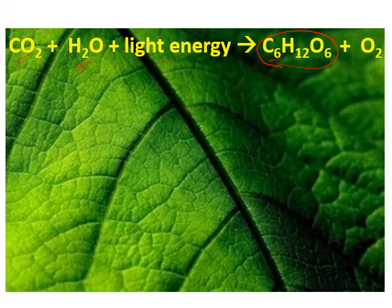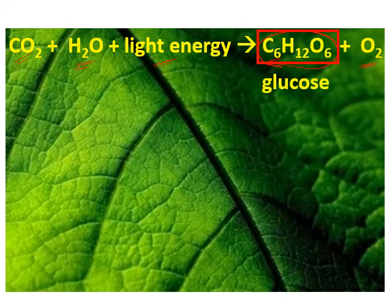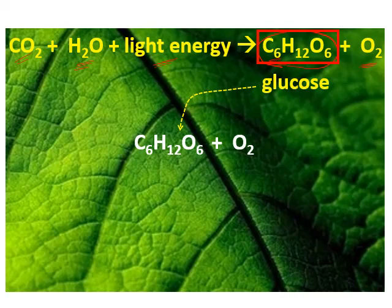The energy that ends up as chemical energy inside the glucose molecule originally comes from sunlight. A waste product of photosynthesis is oxygen gas, and most of it exits the leaf through the stomatal pore. Plant cells not only make their own glucose but also utilize it to release its chemical energy. In some cells the glucose is broken down through aerobic respiration, which involves molecular oxygen.